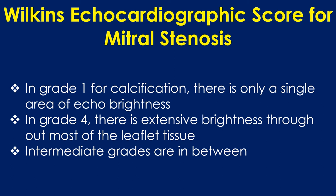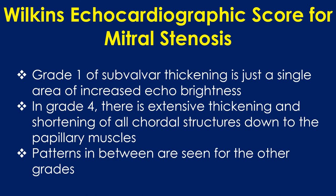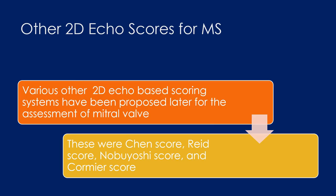For calcification, grade 1 shows only a single area of echo brightness, while grade 4 shows extensive brightness throughout most of the leaflet tissue. For subvalvar thickening, grade 1 is just a single area of increased echo brightness, while grade 4 shows extensive thickening and shortening of all chordal structures down to the papillary muscles. Various other 2D echo-based scoring systems have been proposed, including the Chen score, Reed score, Nobuyoshi score, and Kamiya score.